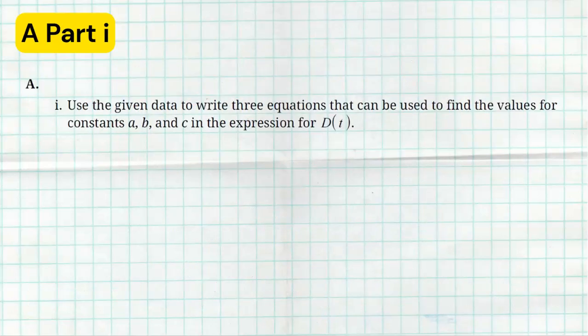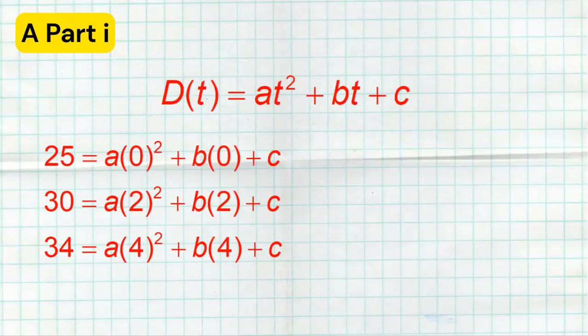All right, so let's dive into the questions. So part A, part one says use the given data to write three equations that can be used to find the values for A, B, and C. So we basically were given three points, and we want to turn those three points into three equations using the model. So the model was at² + bt + c.